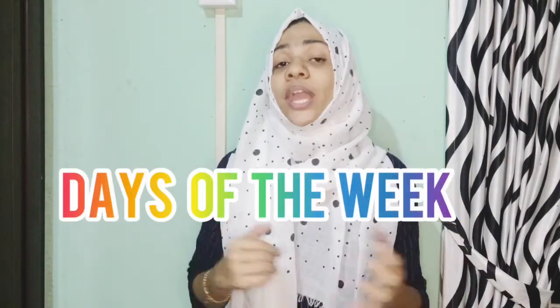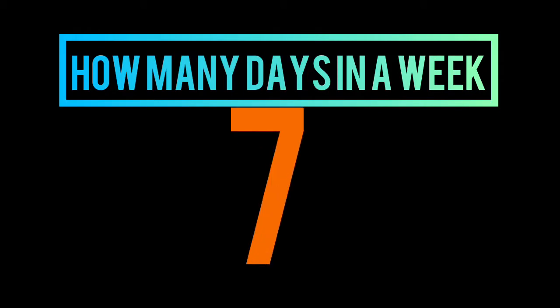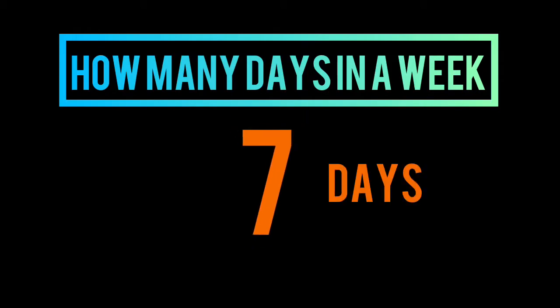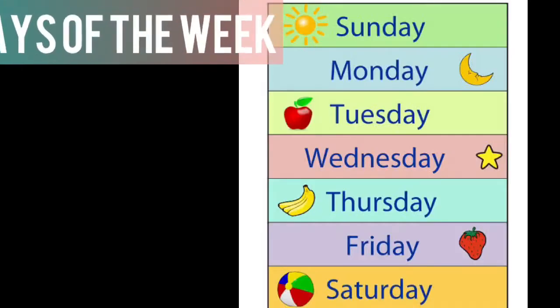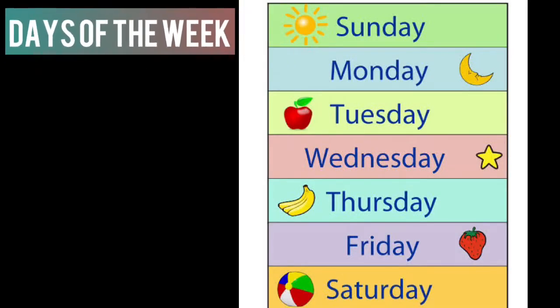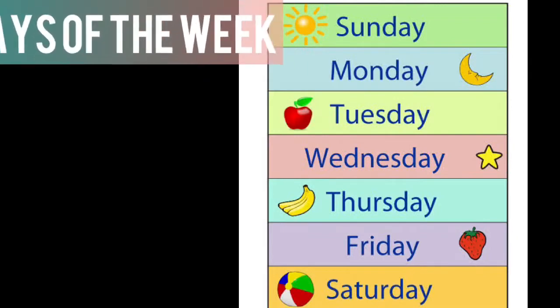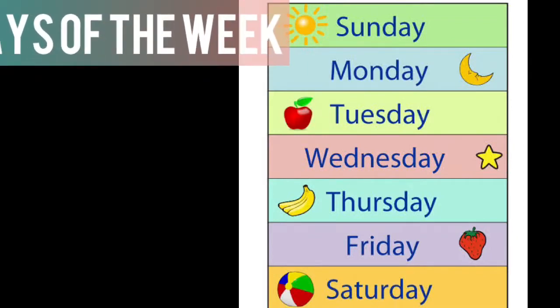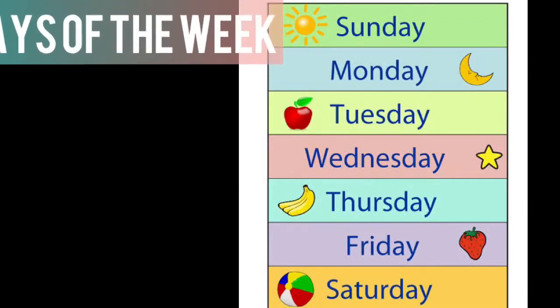Today we are going to learn about days of the week. How many days in a week? Seven days, and they are Sunday, Monday, Tuesday, Wednesday, Thursday, Friday and Saturday. And now we are going to learn a rhyme about days in a week.